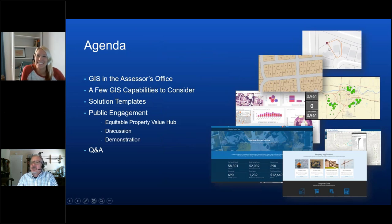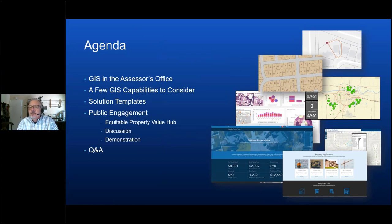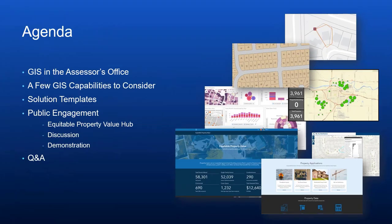I'm going to turn my camera off so you can concentrate on the slides. First, we're going to talk about GIS in the assessor's office. GIS is really an underused utility — a tool and infrastructure in your office — and I'm going to give you a few ideas of how you can use your GIS to a fuller extent. We'll talk about a few capabilities, templates, and then jump right into Equity Property Value, which is a hub solution designed for modern public engagement for the assessor's office.